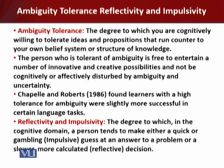People who are more closed-minded and dogmatic tend to reject items contradictory to their own beliefs, showing ambiguity intolerance — they wish to see every proposition fit into an acceptable place in their cognitive organization. By contrast, the person tolerant of ambiguity is free to entertain a number of innovative and creative possibilities without being cognitively or affectively disturbed by ambiguity and uncertainty.